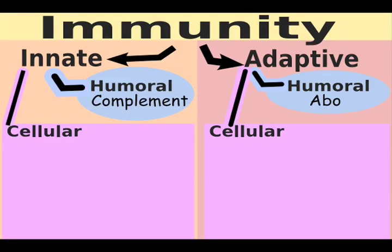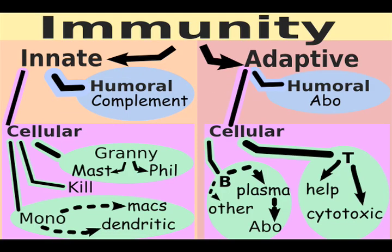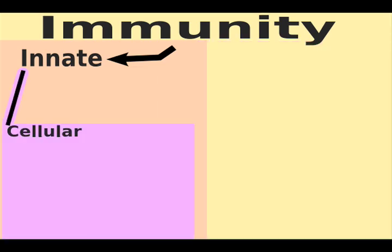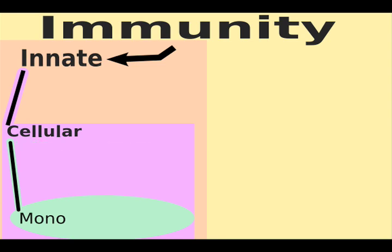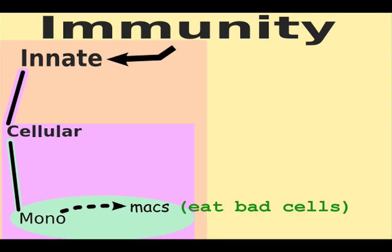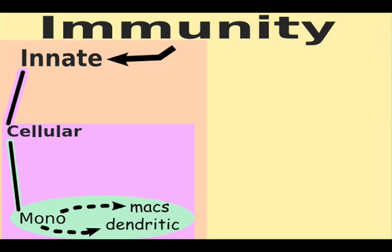The cellular aspect involves cells, which have a lot of scary names. The innate cellular part of immunity can be remembered by 'Mono kills granny.' Mono means monocytes, which grow up to be macrophages, which eat bad cells, and dendritic cells, which present antigens so other cells can kill them.